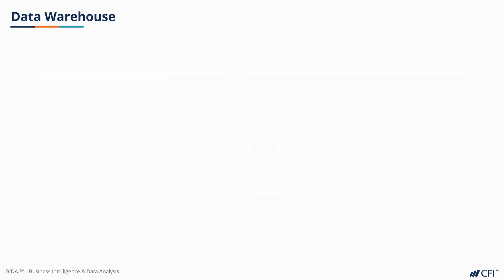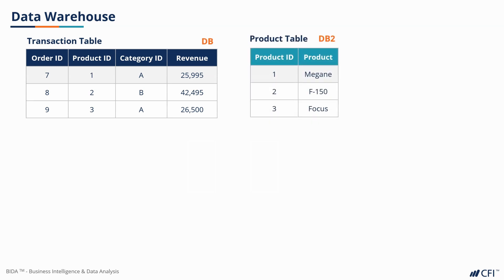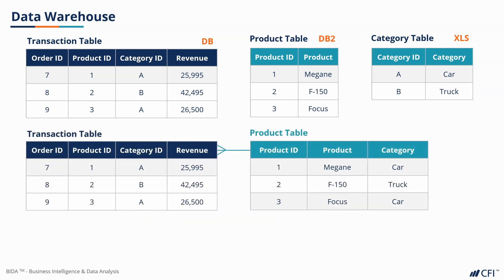Let's look at a simple example of how a data warehouse might be useful. Imagine we have a table of transactions stored in a database, a product table stored in a different database which helps identify those product IDs, and a category table that's actually stored in an Excel file. By creating a data warehouse, we can pull all this information into one place. The transaction table now has a direct relationship to our product table, and the product table now combines both the original product table and the category table.